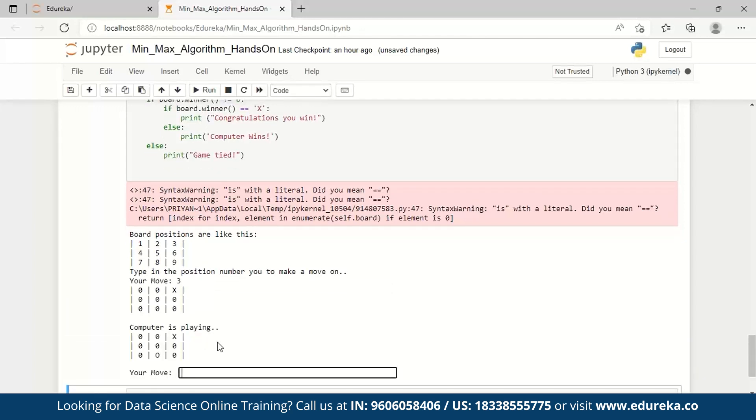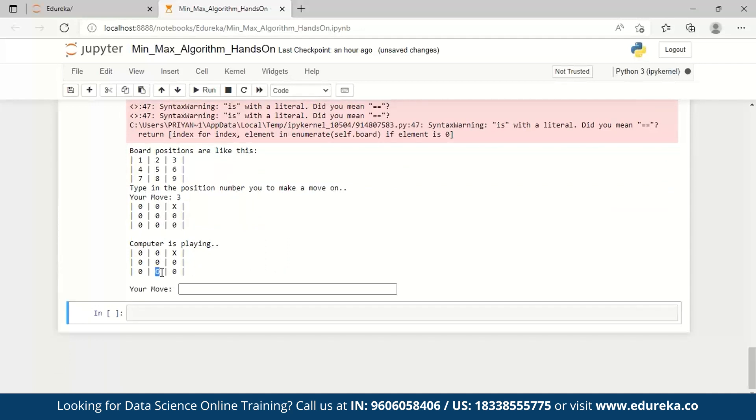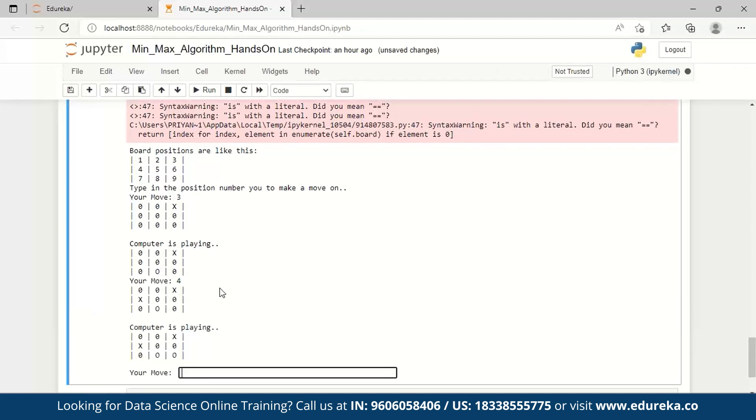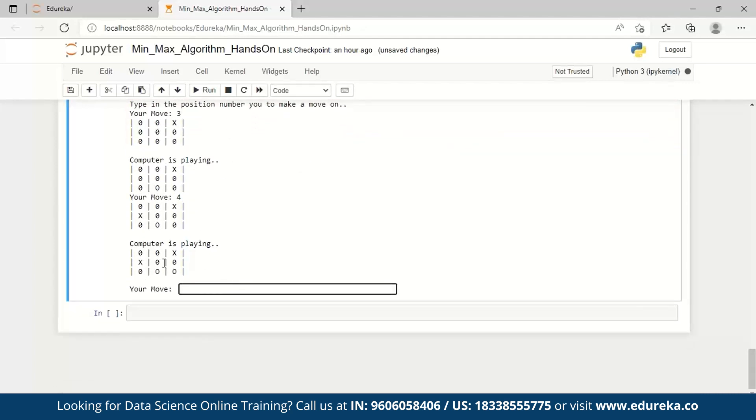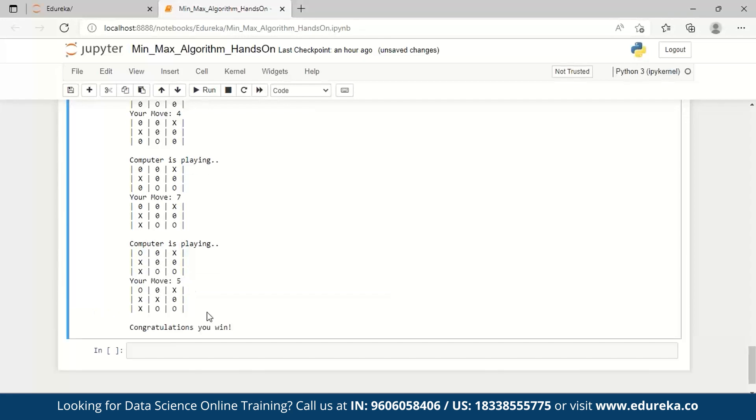I entered it and then it is saying the computer is playing. You can see here the O - this is what the computer plays. Now it's our turn to take another move, so I take four. Let's see what the computer move is - the computer played here. So now I am here and here, so the computer can win by taking a move here. What I'll do is fill this space - that is seven. After taking seven it has come here. I can fill this space so that it doesn't win - that's position five. I entered it and it says congratulations, you've won! We've won finally.